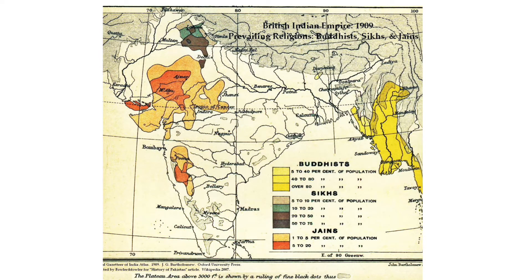Here are some of the other religions. We talked about Buddhists already. Sikhs are concentrated in Punjab, and Jains were around in Western India — Gujarat, what is now modern-day Gujarat — and Maharashtra, what was then the Bombay presidency in the British Raj, which was the governing instrument we'll talk about more next week.